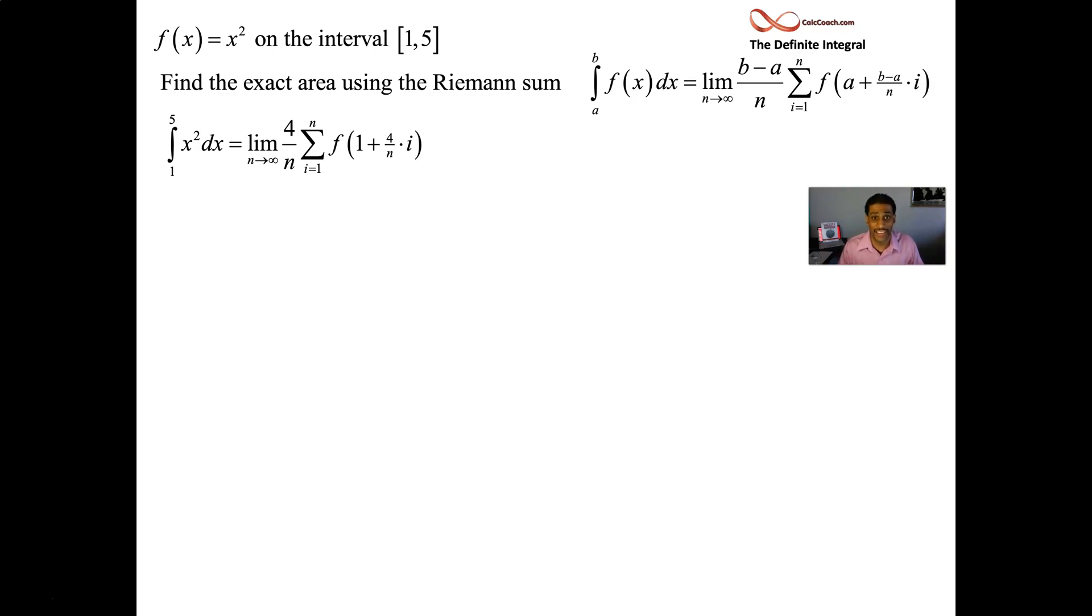Where do we begin? The function f - we have to plug in one plus four i over n for x, then square it. It's a binomial, we can square it. When you foil it out, you'll have one plus eight i over n plus 16 i squared over n squared. Don't forget that four over n on the outside, that's your delta x.